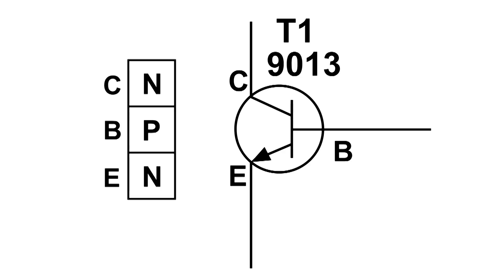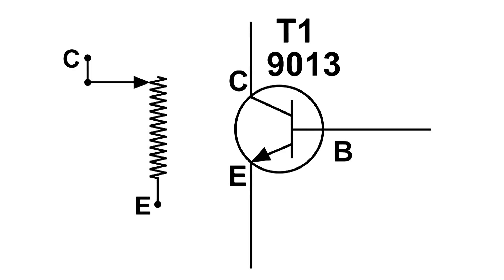So we end up with C, B, and E. E and C is like a resistor but a variable one, and it depends on how much positive voltage we put on B.